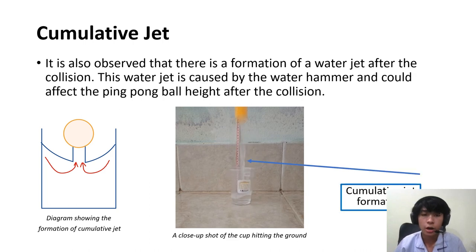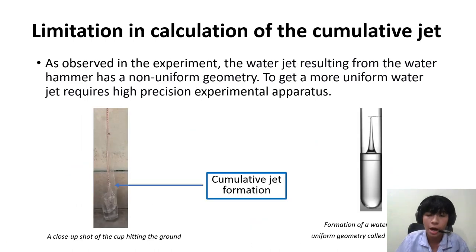Next up, we also observe that there is a formation of water jet after the collision. This water jet is caused by the water hammer. As seen from the video, our cumulative jet has a non-uniform geometry. So we cannot find the exact radius of the jet. And the calculation for that is very complex.